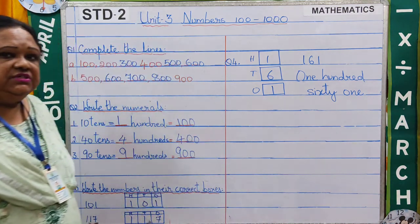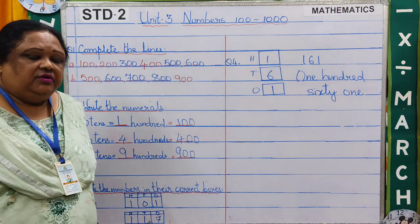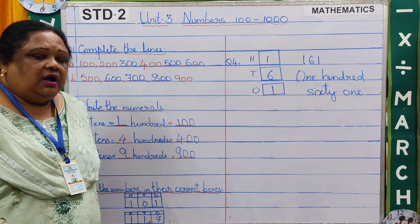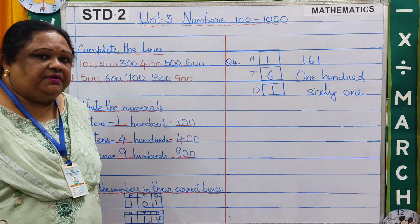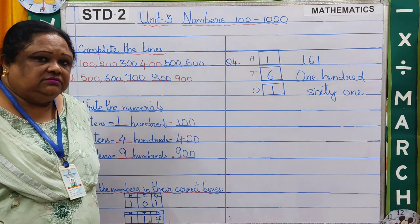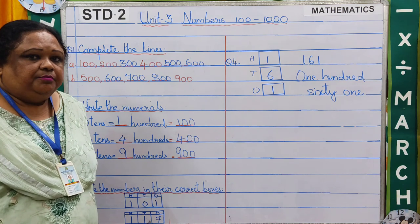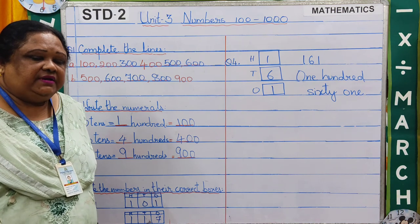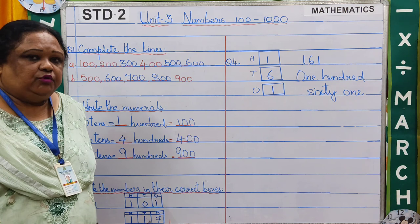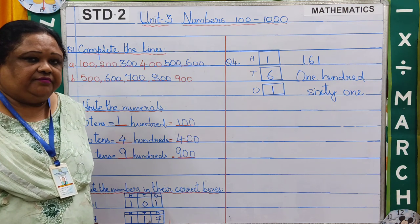So you see children, you have understood how to write numbers from 100 to 1000. You can practice pages 29 to 34 at home. Keep safe. Thank you.